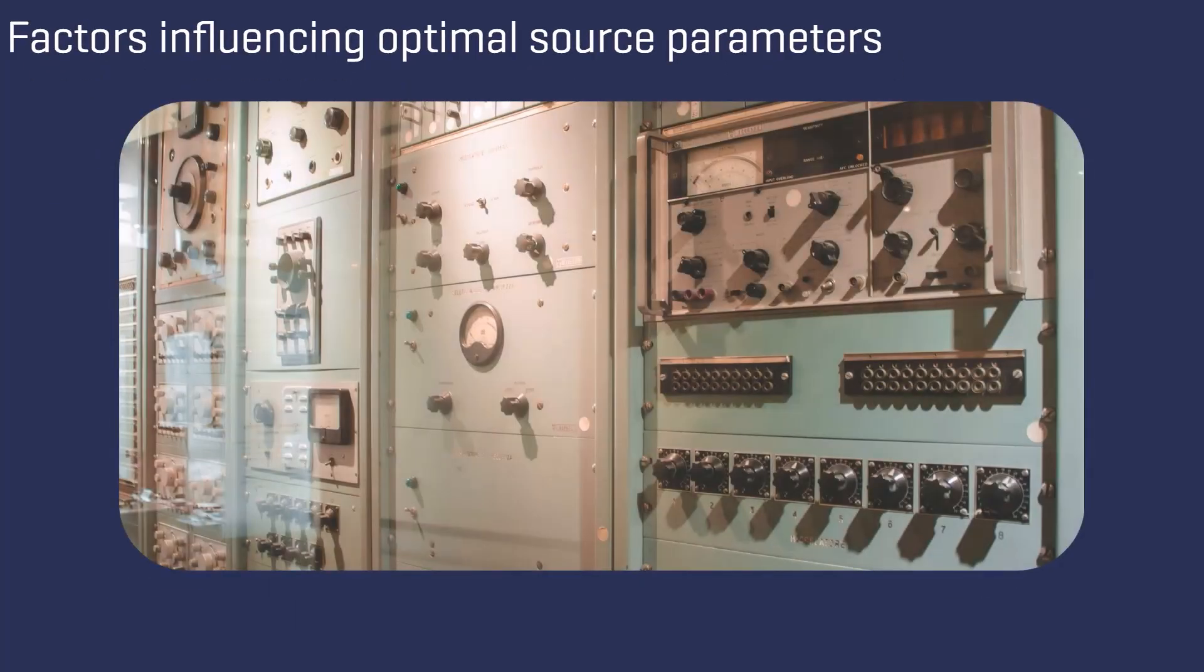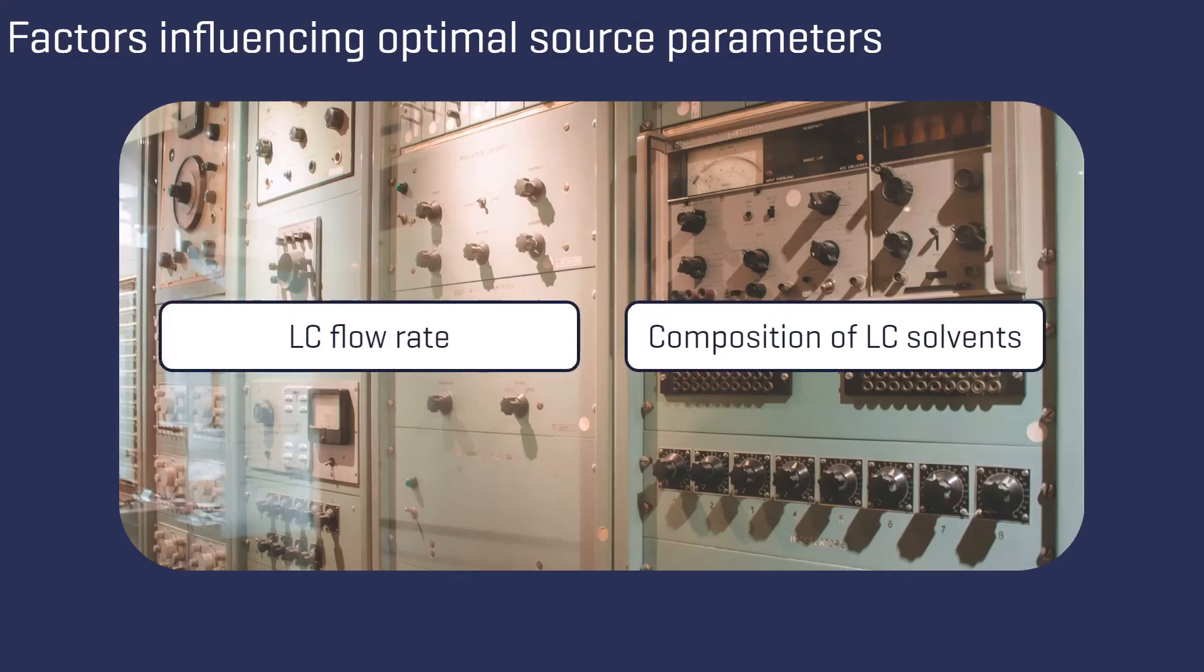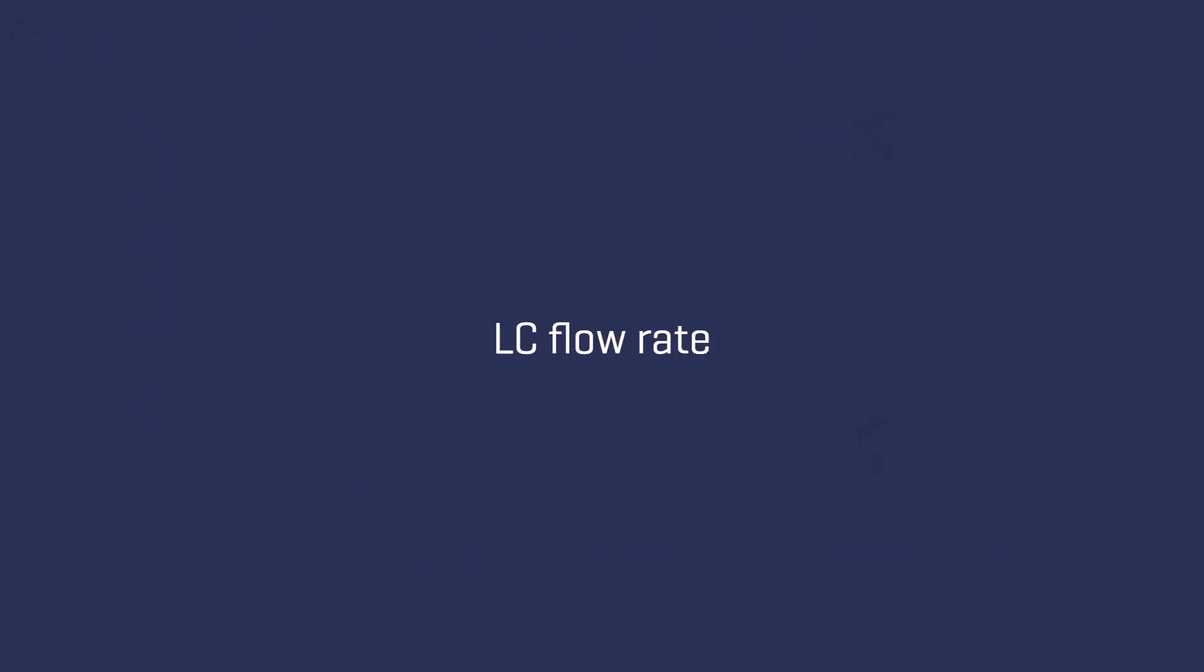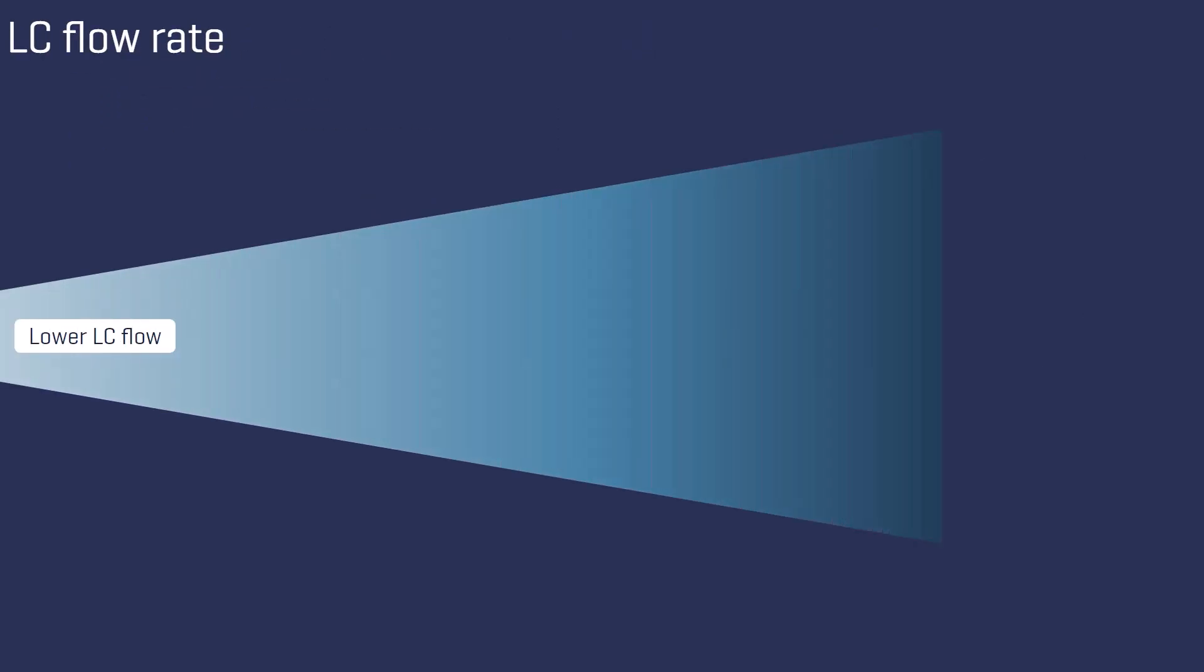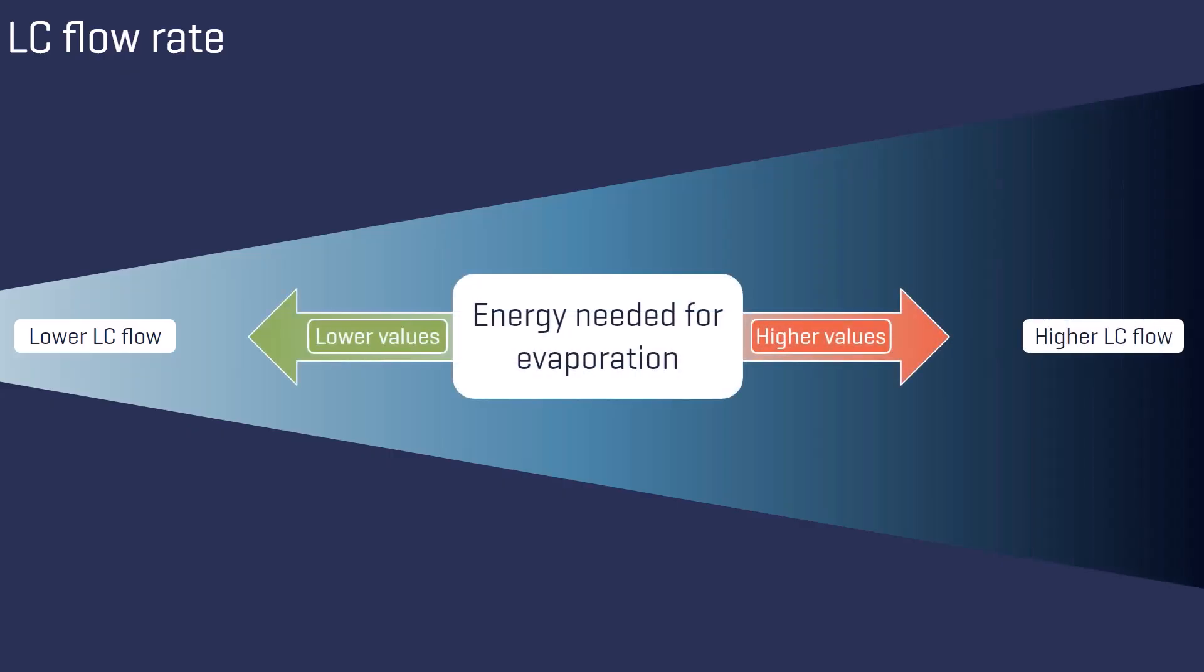What factors influence the optimal source parameters? They are mainly found in the flow rate and the composition of the LC solvent. As the LC flow rate entering the ion source increases, a greater amount of energy is required to evaporate the solvent.